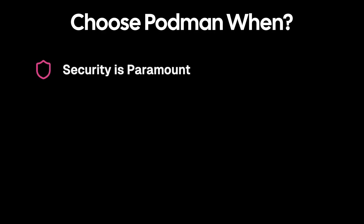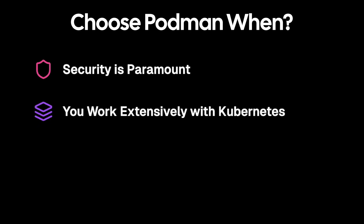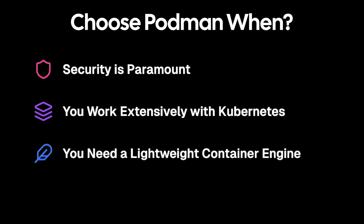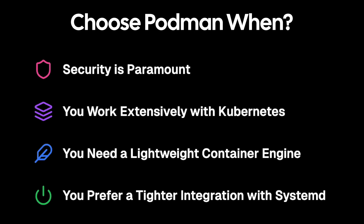So let's summarize what you may want to pick — I recommend you try both, as they're easy to set up. The choice between Docker and Podman hinges on your priorities for security, Kubernetes integration, performance, and ecosystem support. Choose Podman when security is paramount — the daemonless and rootless architecture makes it inherently more secure out of the box. Choose Podman when you work extensively with Kubernetes, as the pod implementation can streamline the transition from local development to Kubernetes deployment. Choose Podman when you need a lightweight container engine — the daemonless design results in a smaller footprint and faster container startup times. And choose Podman if you prefer tighter integration with SystemD, using familiar SystemD commands for starting, stopping, and monitoring.